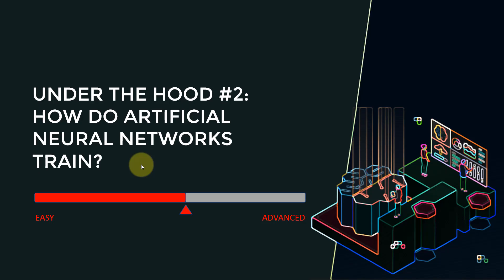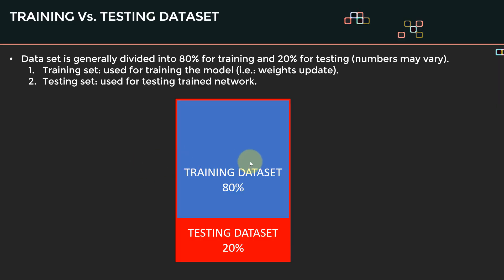When we train the artificial neural network, we teach it using the training data. Once the model is trained, we test its performance using the testing data — the remaining 20 percent. A very important distinction is that the testing data is data the model has never seen before during training.